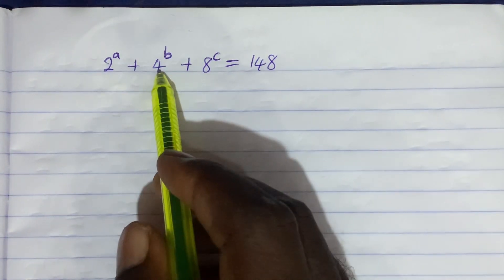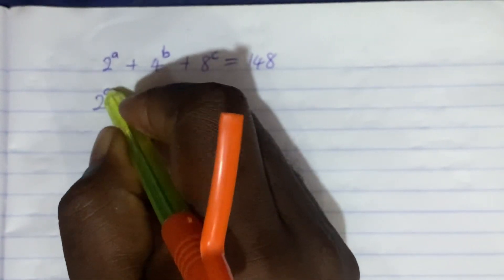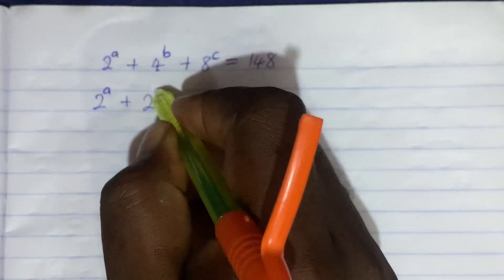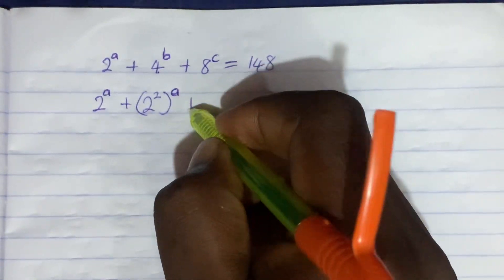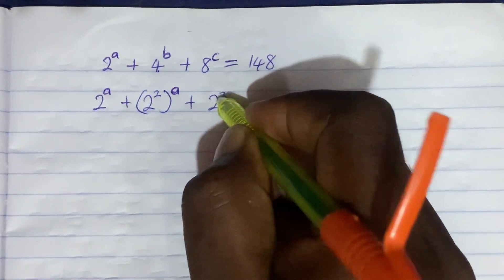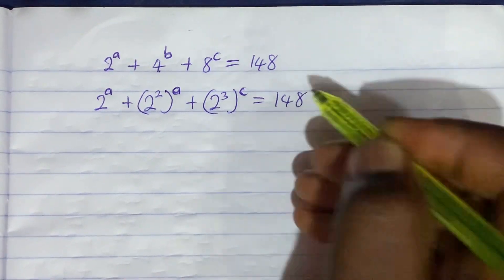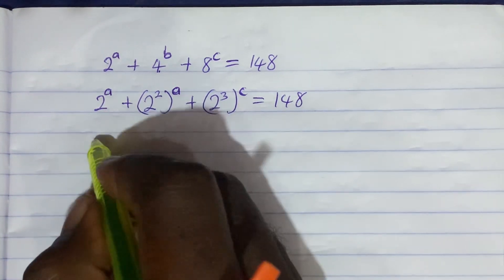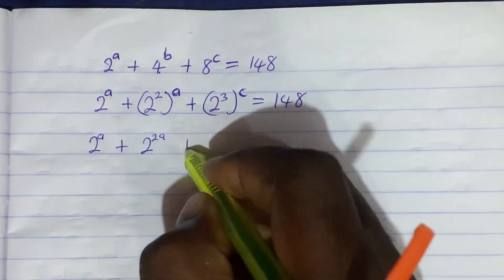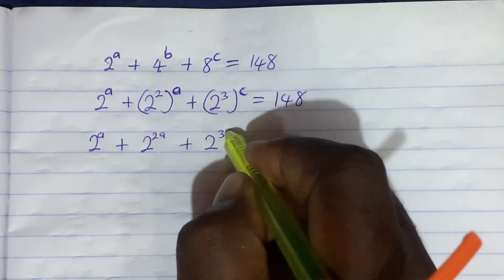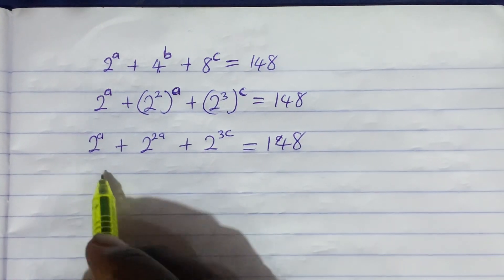The first thing we do is break down 4 and 8. So this becomes 2 raised to the power A, plus 2 raised to the power 2B, plus 2 raised to the power 3C, all equal to 148.